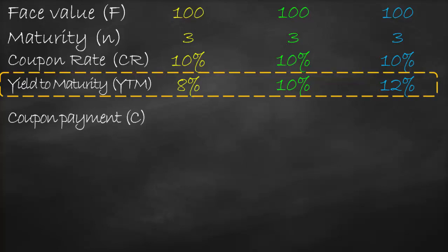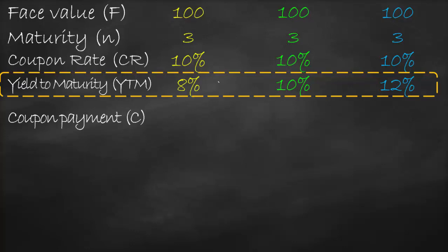Let's start by calculating the coupon payment C. The formula for coupon payment is coupon rate times face value. In all three scenarios we have the same coupon rate of 10% and the same face value of 100. Therefore, our coupon amount will be 10% × 100 = 10. The coupon payment will be 10 in all scenarios.